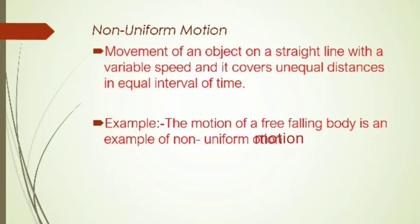Moving further, the definition of non-uniform motion: Movement of an object on a straight path with variable speed, covering unequal distances in equal intervals of time.